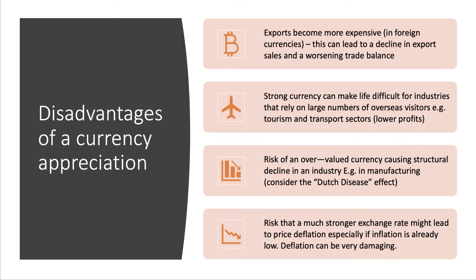More generally, if the currency becomes overvalued — rising 10%, 15%, 20% or more — that can sometimes cause structural decline in an industry. This is called the Dutch disease effect, where an increase in the world price of a major export (such as palm oil, avocado, or iron ore) drives up a country's exchange rate and causes the manufacturing sector to really struggle and suffer.